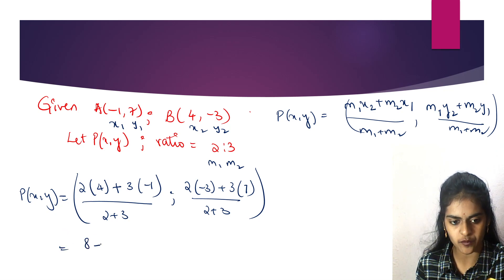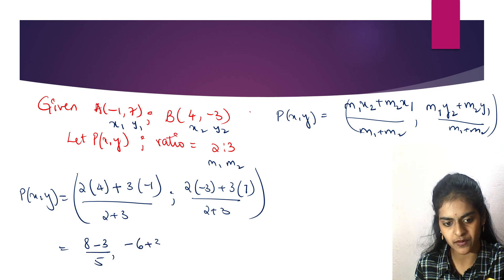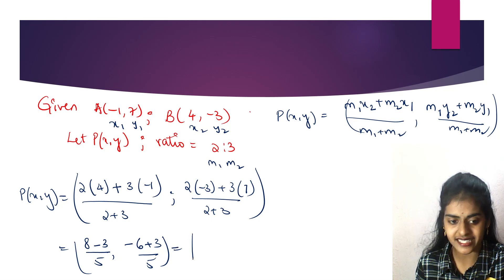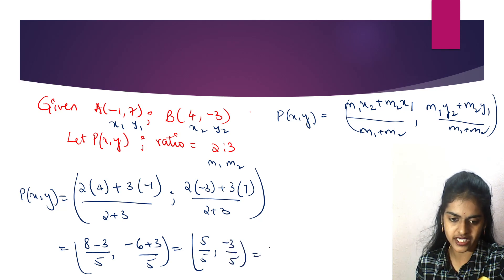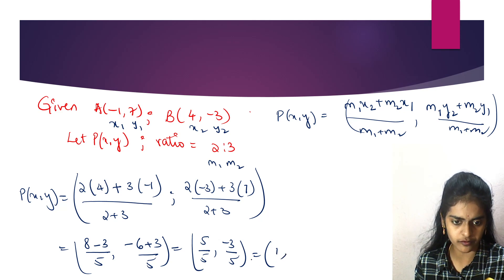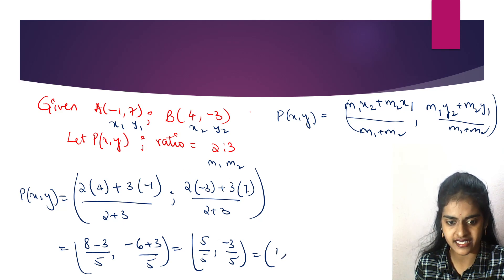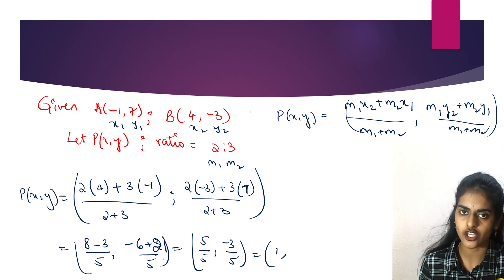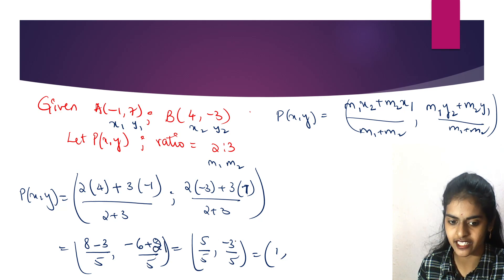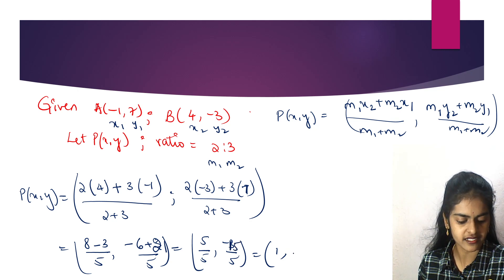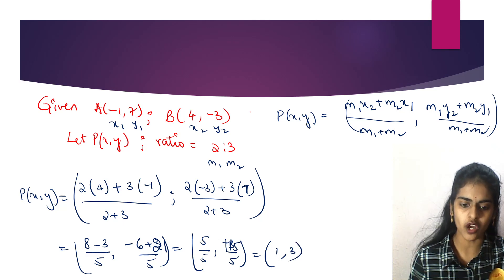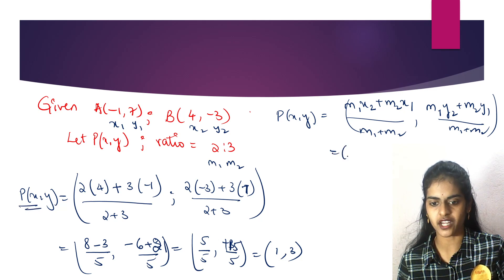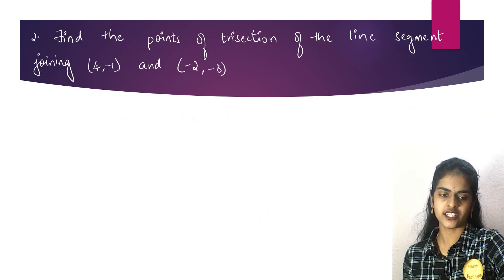Substituting all values: X = (2×4 + 3×(-1)) / (2+3) = (8 - 3) / 5 = 5/5 = 1. For Y: (2×(-3) + 3×7) / (2+3) = (-6 + 21) / 5 = 15/5 = 3. So the final answer is P(X, Y) = (1, 3). Let's move on to the next question.